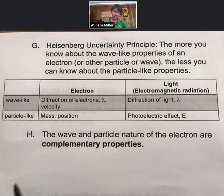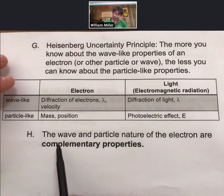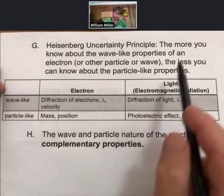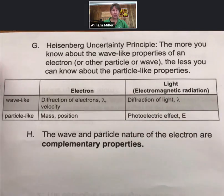This result comes from quantum mechanics, and the wave and the particle nature of the electron are complementary properties. And that's what it's called when you talk about the more you know about one, the less you know about the other.